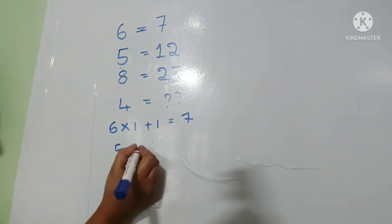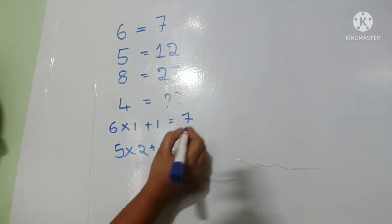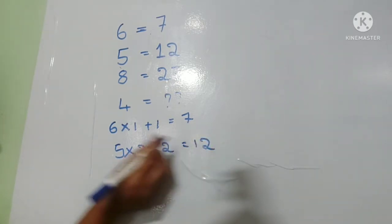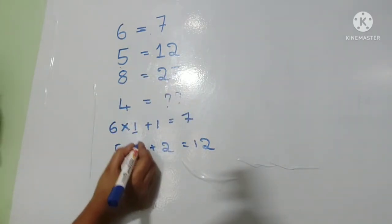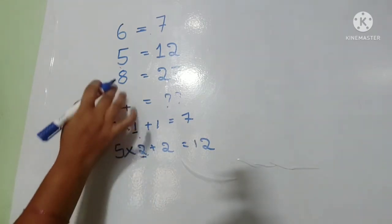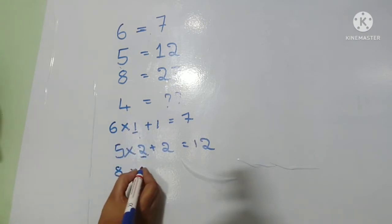Five into two plus two equals twelve. Eight equals twenty-seven. Next, two ones is two, so one increases. So eight, eight multiply by again one increase: three plus three. Eight times three is twenty-four.